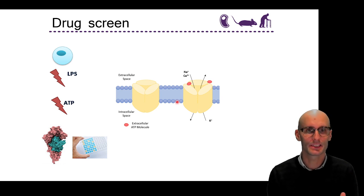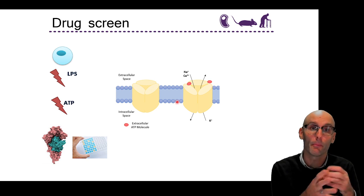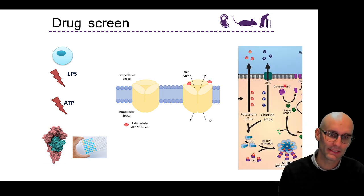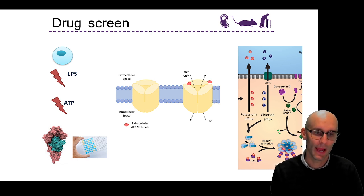Now, ATP binds to this receptor called P2X7 on the surface of these macrophages which opens up a pore which allows potassium efflux. There you can see the potassium leaving. And this, as we can see over here, potassium efflux is a major trigger of NLRP3 activation. So, if we activate a receptor called P2X7 with ATP, we will cause potassium efflux.